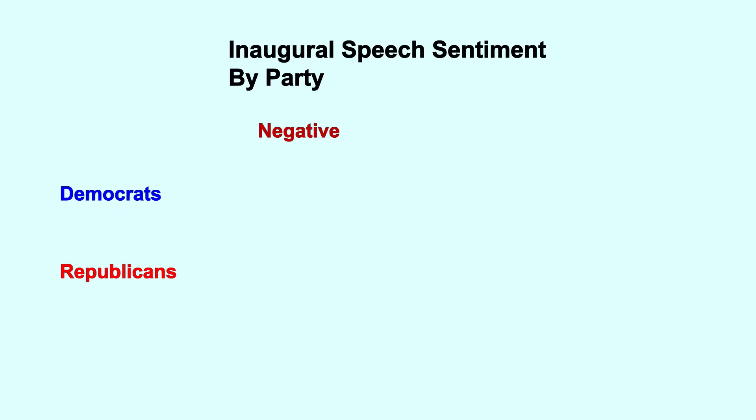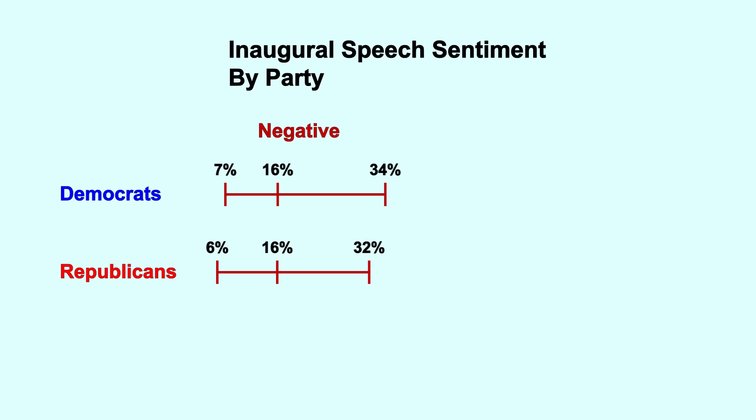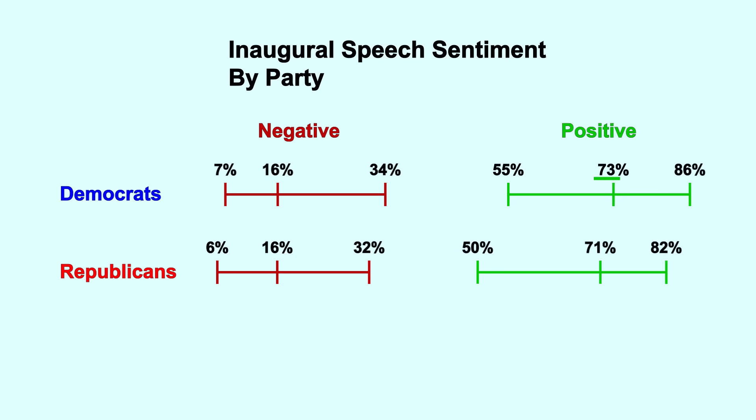If we look at the reading level of both parties, we can see that they are basically the same — both Democrats and Republicans, on average, speak at the 11th grade reading level. If we look at sentiment, again, both parties are pretty similar. Their negative sentiment averages around 16%, and their positivity sentiment averages around the low 70s. Given how many different speakers we're examining over the years, I'm surprised how similar they are. We're just looking at inaugural speeches and including older speeches back when people spoke differently.